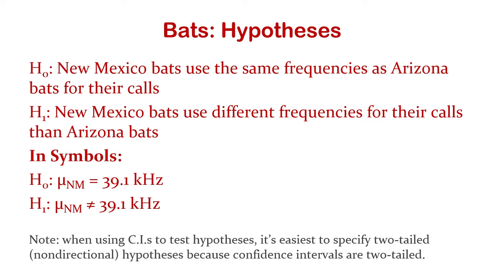When we're going to use this method, we'll force even one-tailed or directional hypotheses into a two-tailed mold. Later we'll be more specific about one versus two-tailed, but for right now let's force it all into a two-tailed mold.